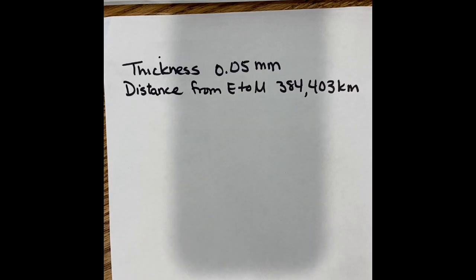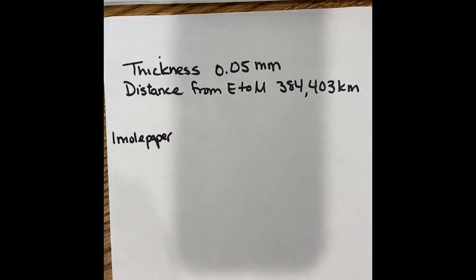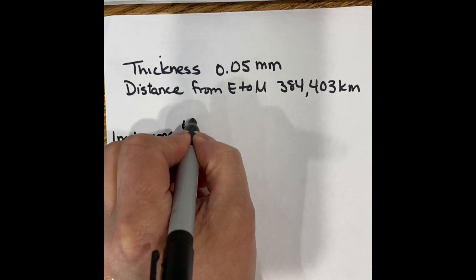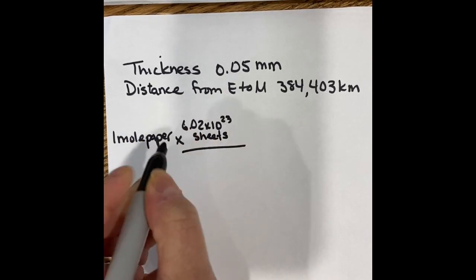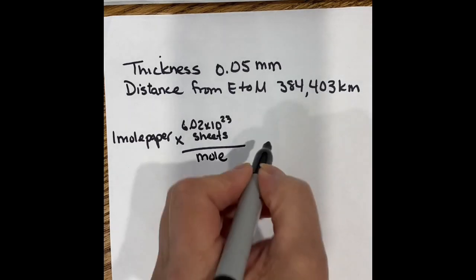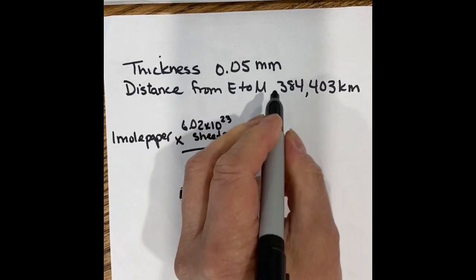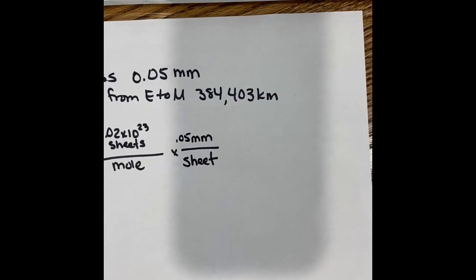So when you start one of these problems, the question is if you had a mole of paper, that's where we're starting. So one mole of paper, well, one mole of paper is equal to 6.02 times 10 to the 23rd sheets of paper, right? So 6.02 times 10 to the 23rd sheets per mole. And we know that one sheet of paper is equal to 0.05 millimeters. So now I'm in a distance.